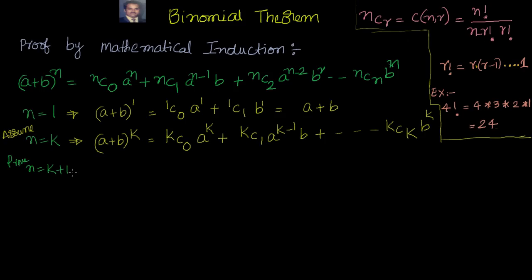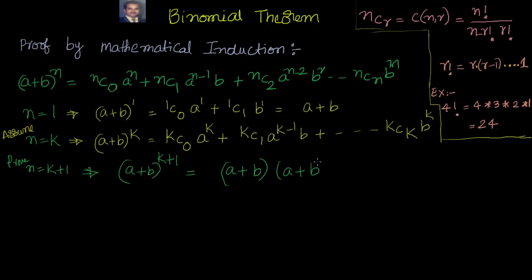Now we have to prove this is true for n equal to k plus 1. The left hand side will be a plus b whole to the power of k plus 1. This is nothing but a plus b times a plus b whole to the power of k. I've written it this way because I can do simple multiplication with a and b applied to the known expansion of a plus b to the power of k.